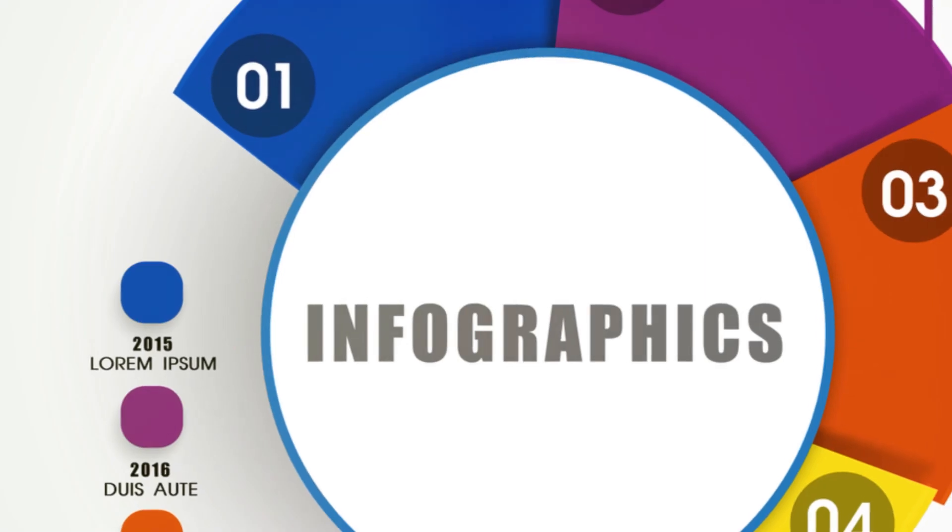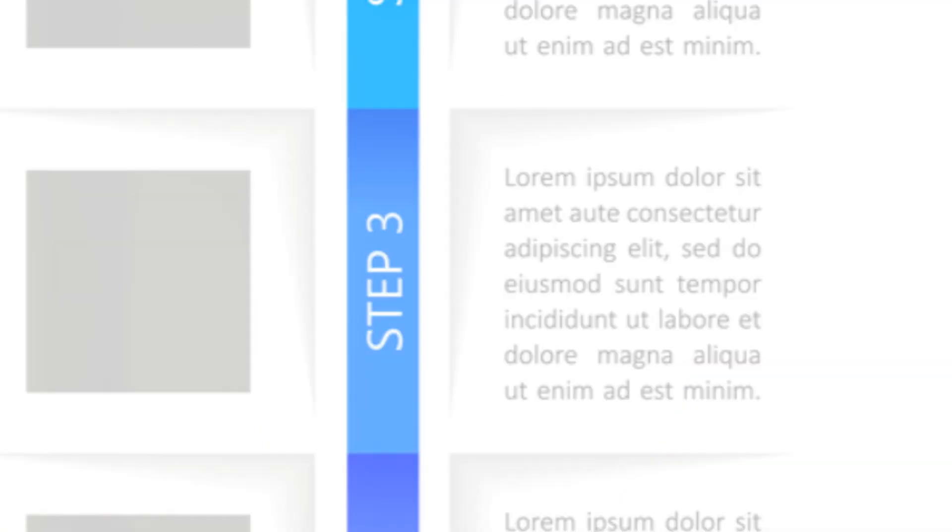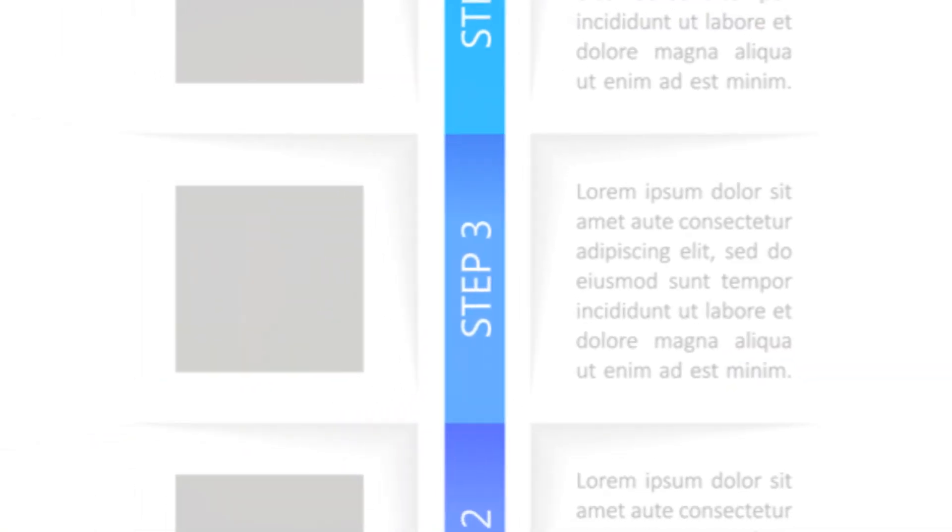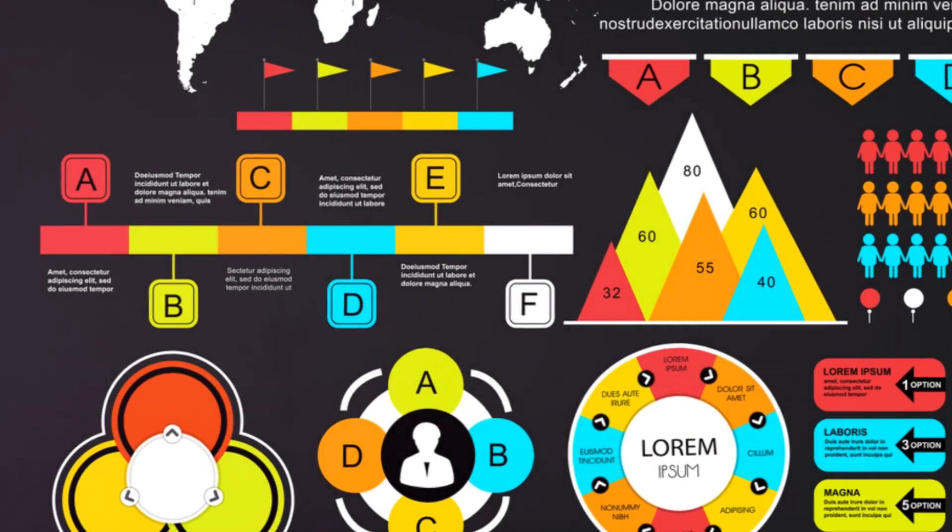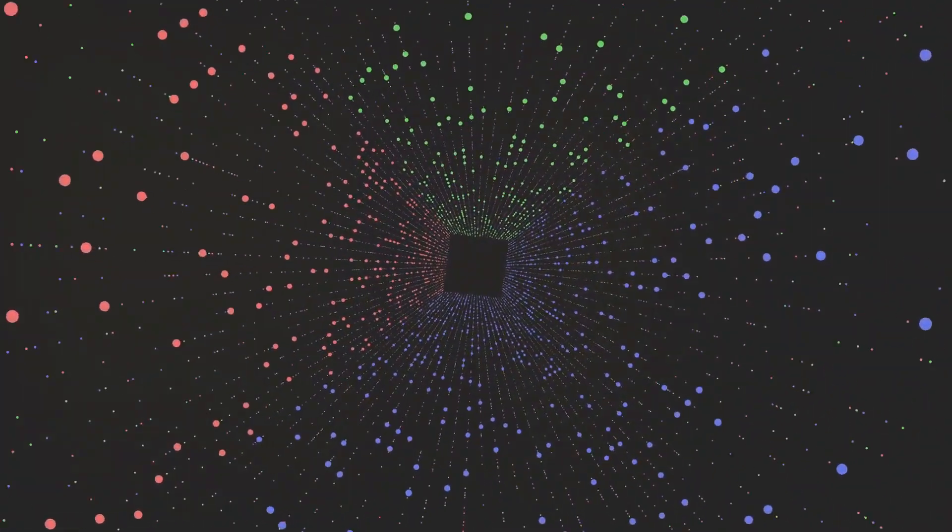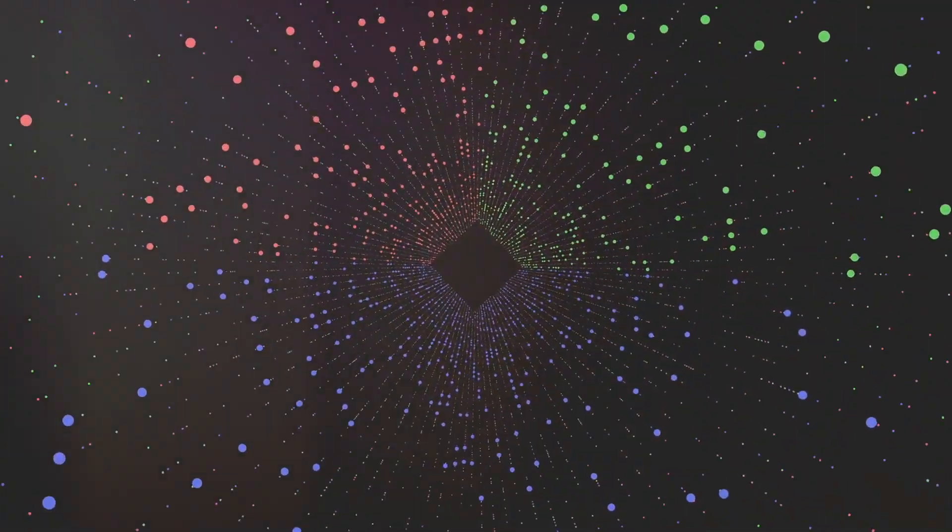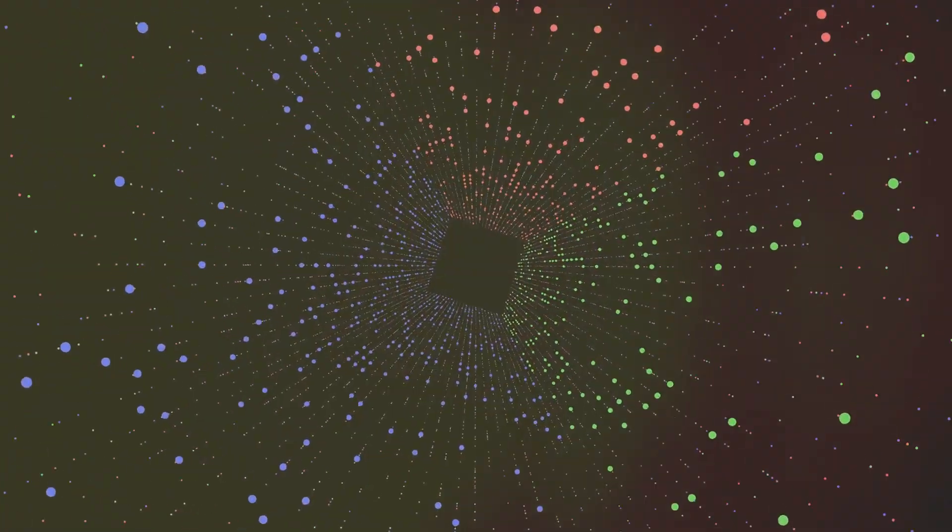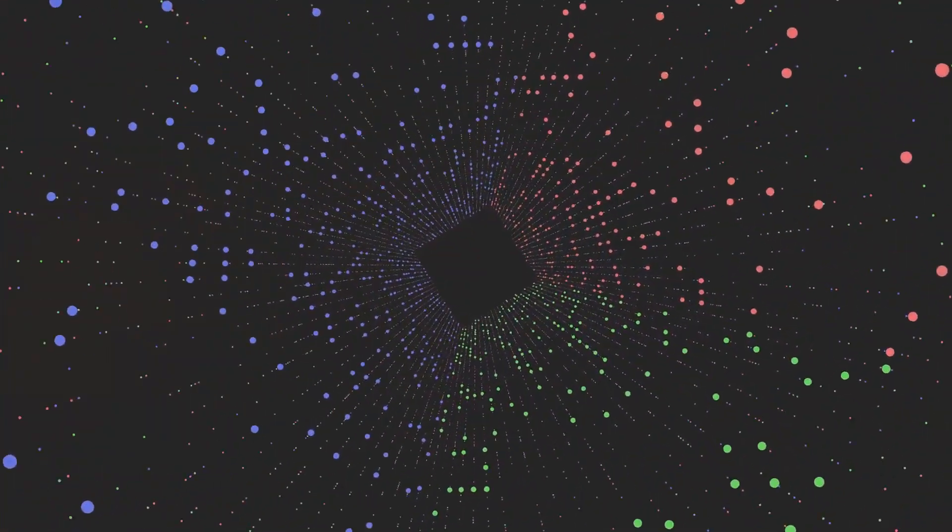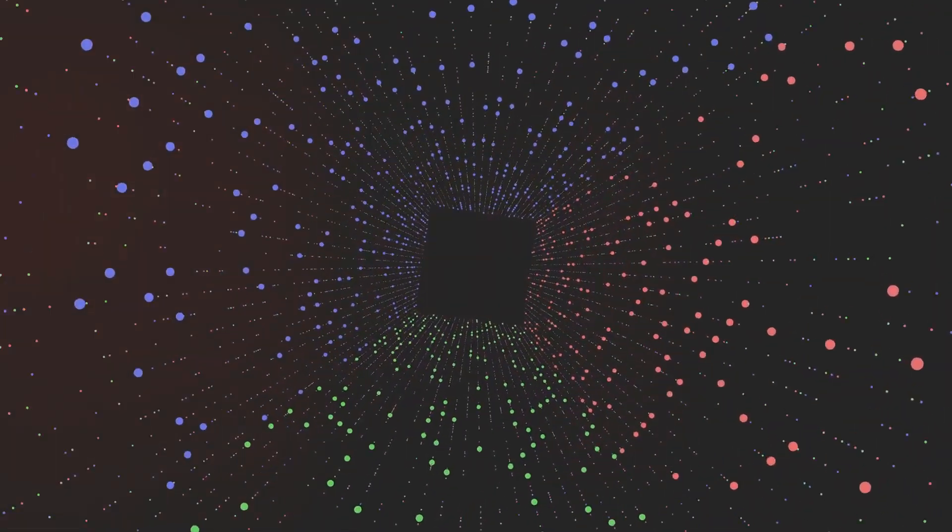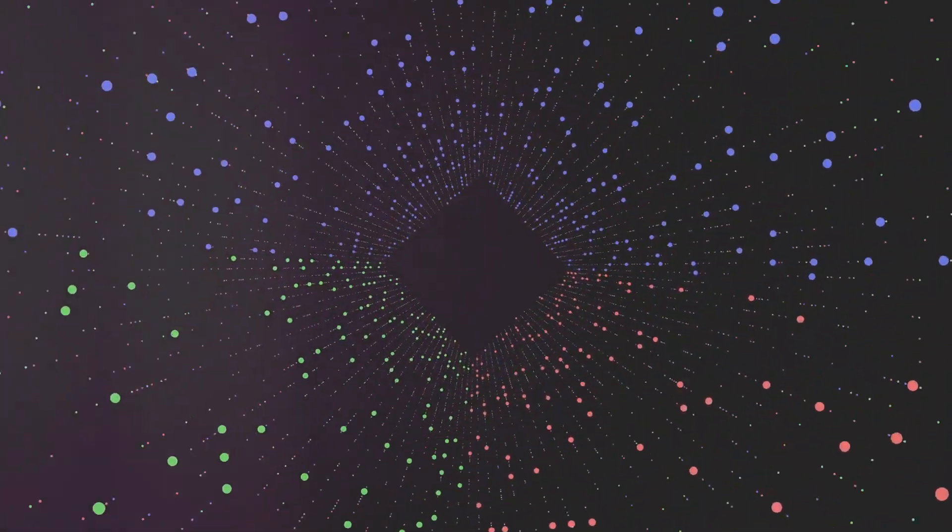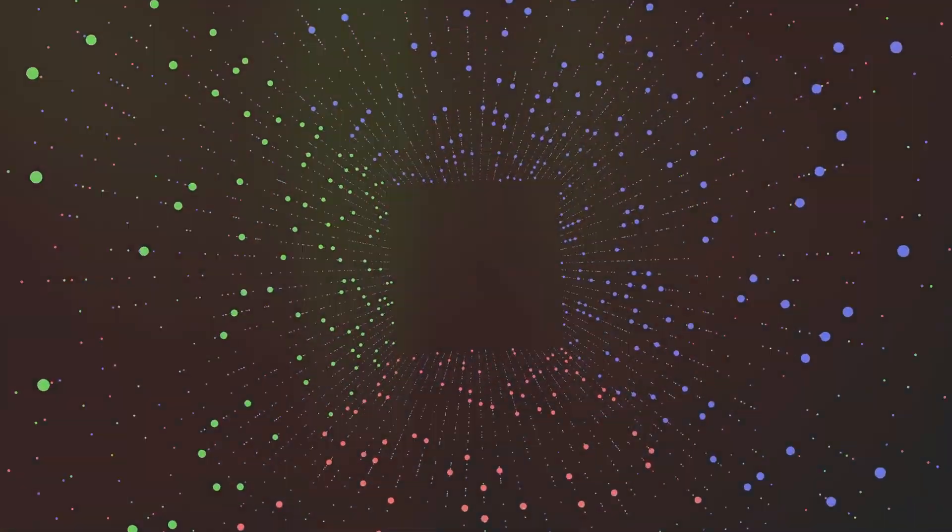Next, we move on to layout. A well-structured layout can guide your viewer's eyes through the information in a logical order. This can be achieved by using techniques like F or Z patterns, which are based on natural eye movement. Aligning elements, maintaining consistency and providing white space can also improve the readability and comprehension of your visualisations.